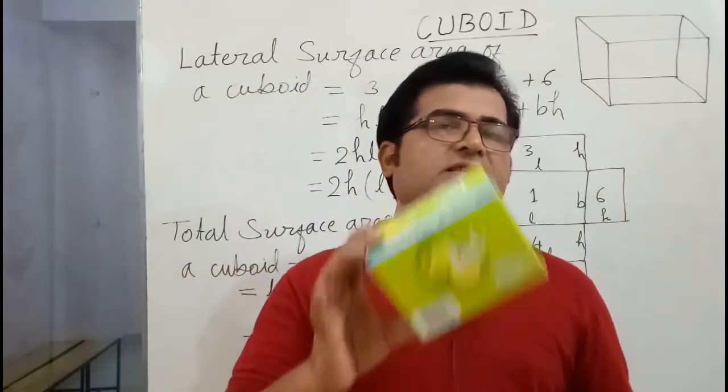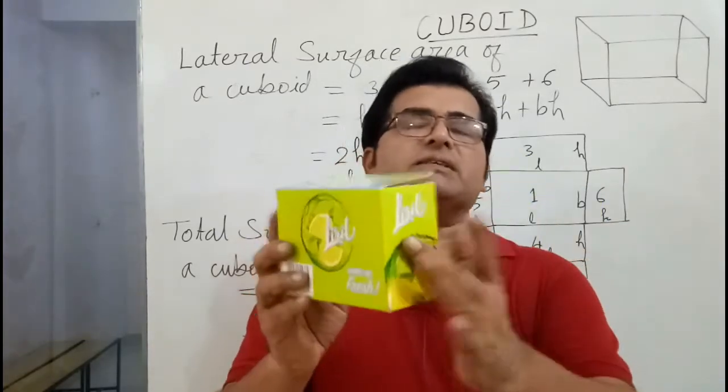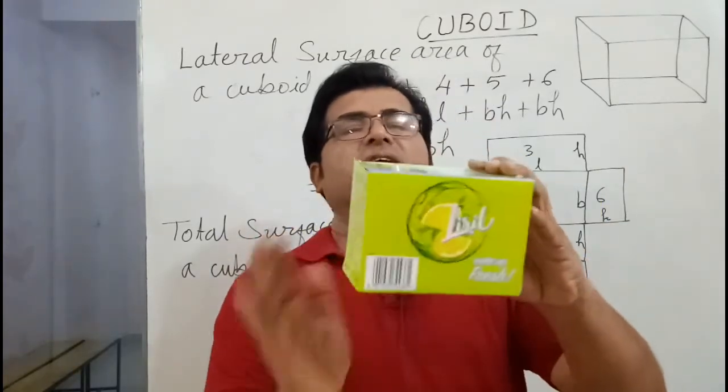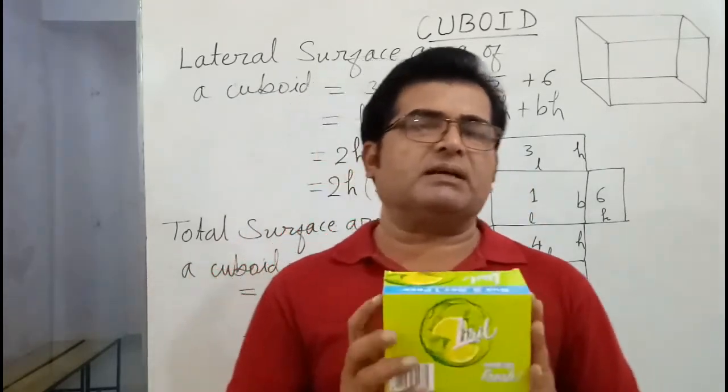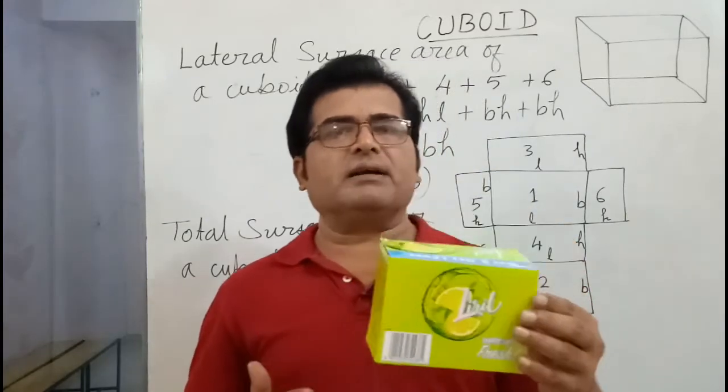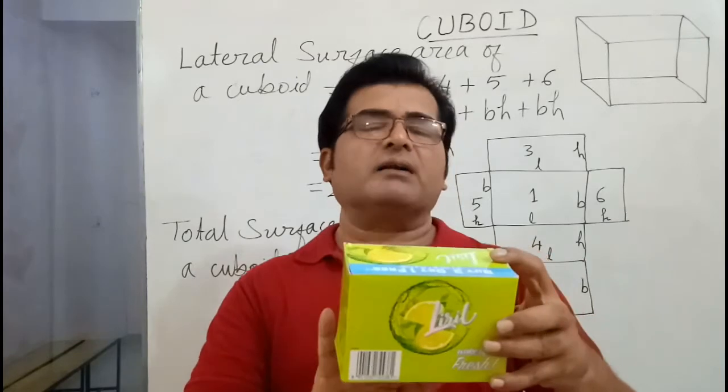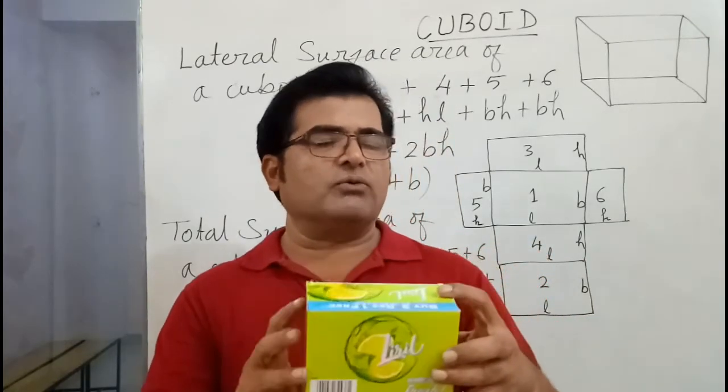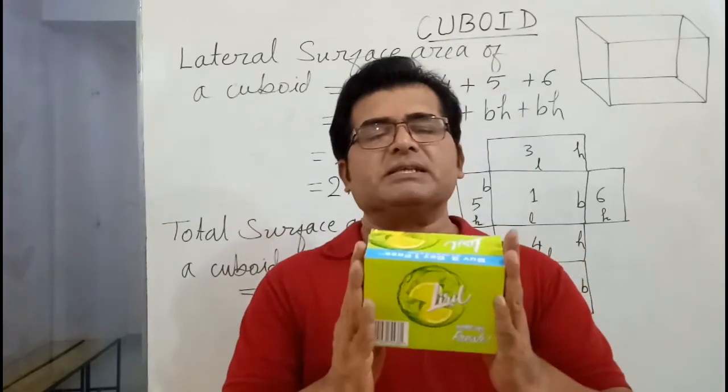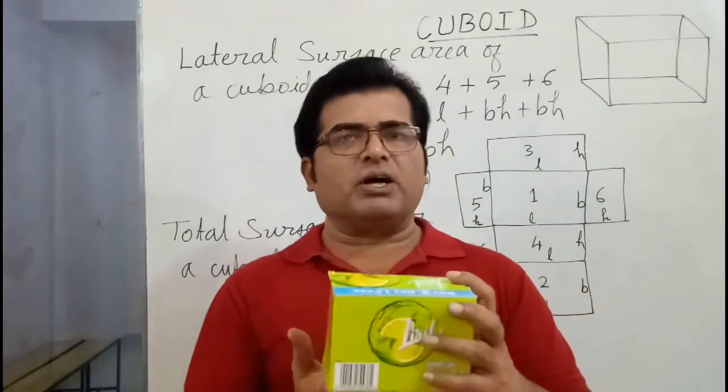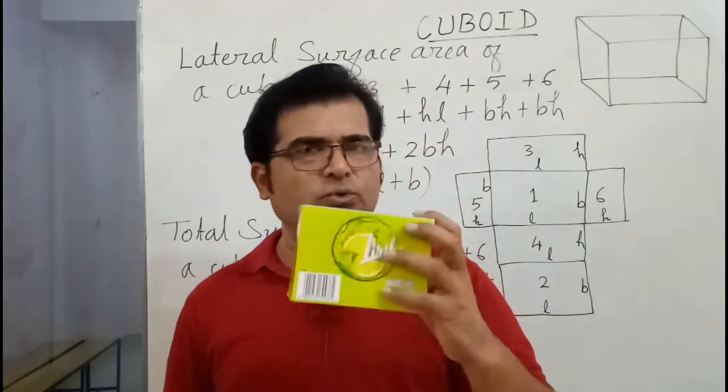This cuboid is having 6 faces. How 6? 1, 2, 3, 4, 5, 6. Means front face, back face, top, bottom and 2 side faces. 6 faces it has and all faces are rectangles. Also there, the opposite faces are congruent. Opposite faces are congruent means front and back face is congruent, side faces are congruent, top and bottom are congruent. And they are in shape of rectangles. So area of a rectangle equals L into B.